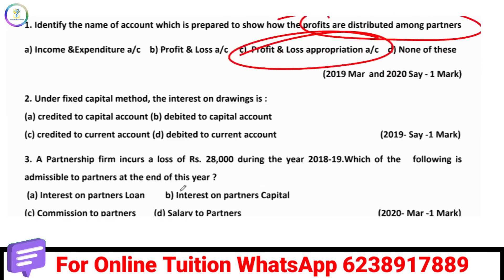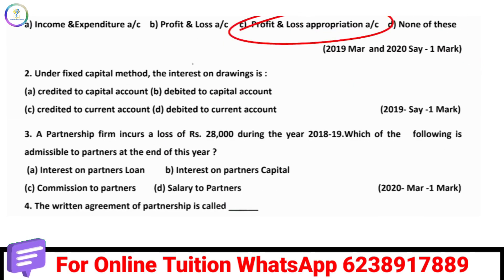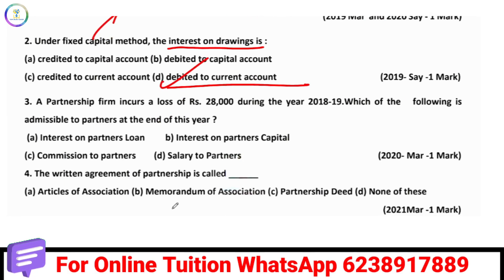Where is interest on drawings in the fixed capital method? In the fixed capital method, there are two accounts: the Partners Capital Account and the Partners Current Account. All adjustments are made in the Current Account. So, debited to the Current Account is the correct answer.